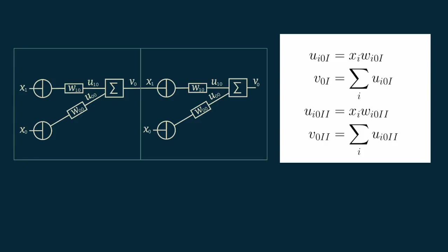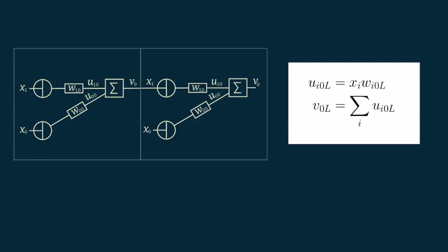Now we have two separate identical layers. We can add a subscript Roman numeral i and a subscript Roman numeral ii or 2 to our equations depending on which layer we're referring to. And we just have to remember that our x sub 1 in layer 2 is the same as our v sub 0 in layer 1.